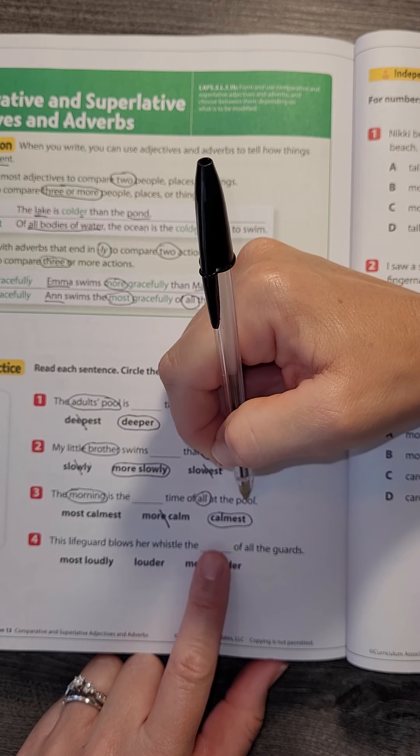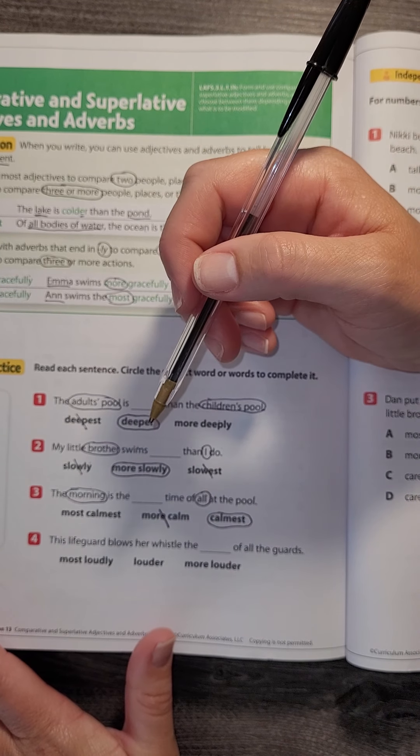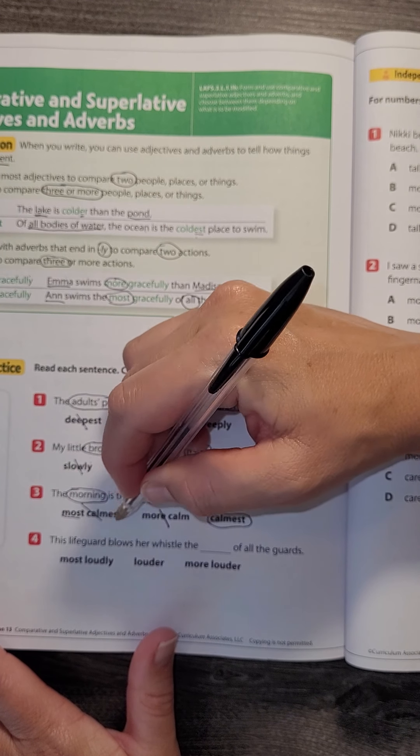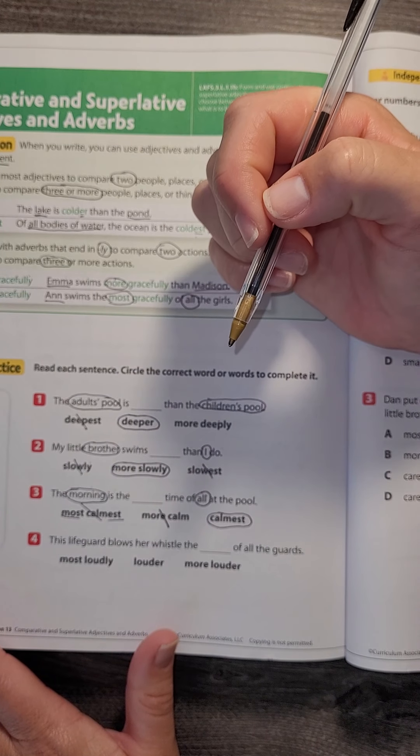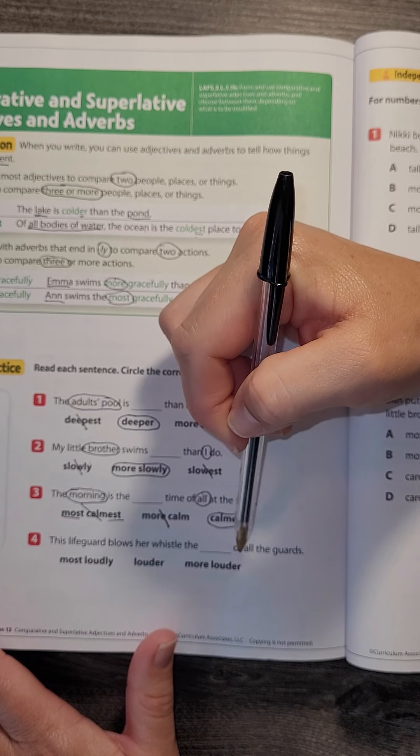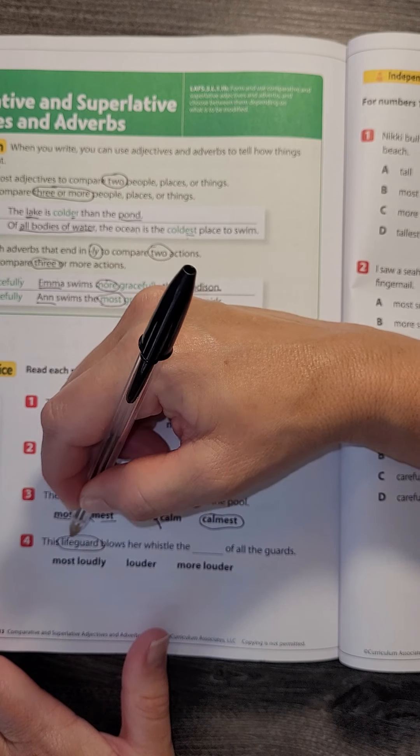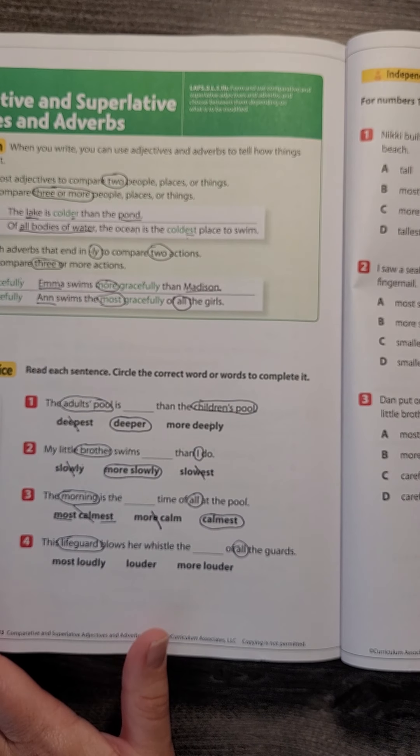time of all. 'Calm' is an adjective to describe the morning. It is not a verb, so we wouldn't say 'most' and '-est' together. This lifeguard blows her whistle the blank of all the guards. So I have a lifeguard comparing to all of the guards.